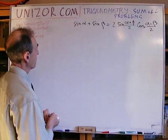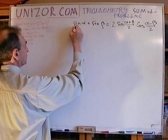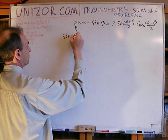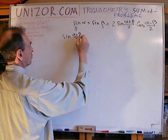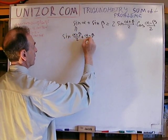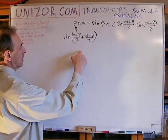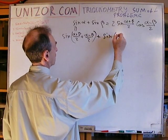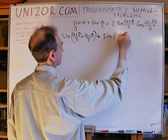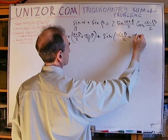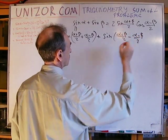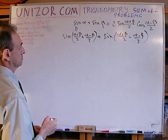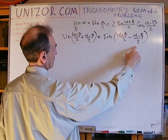We will use the formula for sum and the difference between different angles. On the left, it's equal to sine of alpha plus beta over two plus alpha minus beta over two, plus sine of alpha plus beta over two minus alpha minus beta over two.